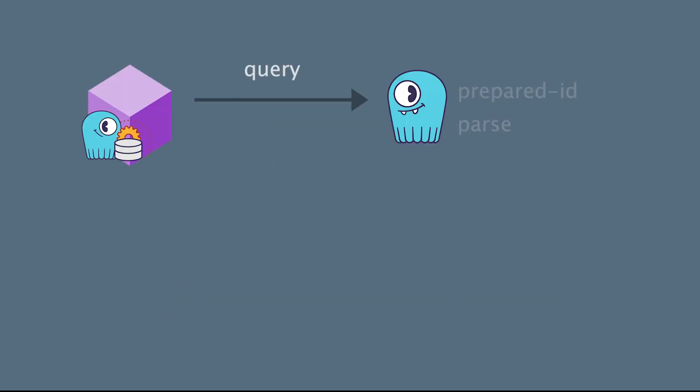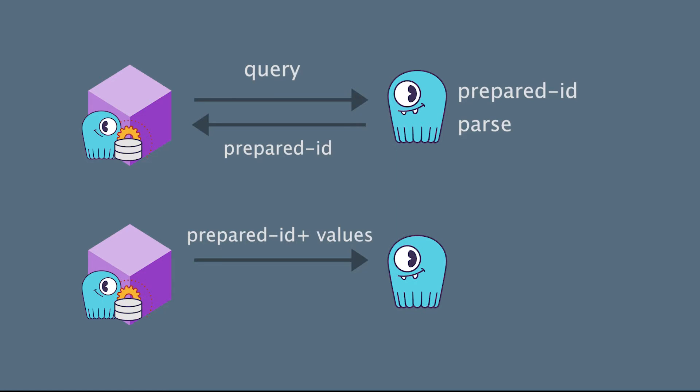First, the driver will send that prepared statement to the database. The database will compute an ID, parse that query, and then cache both the ID and the parsed query in the database, and send the prepared ID back to the driver which will also cache it. So the next time you use that same query, you will only send that ID and the values that are bound to the query. The database will retrieve the cache using the ID, execute the query, and send back the result. This process is more efficient because it saves compute and parsing time at the database level.